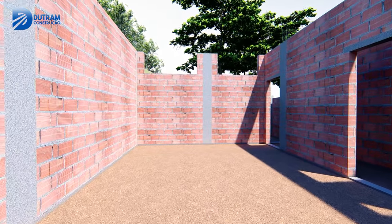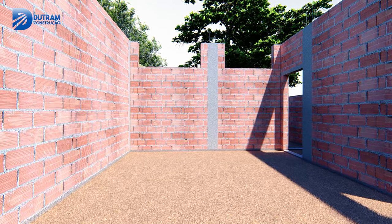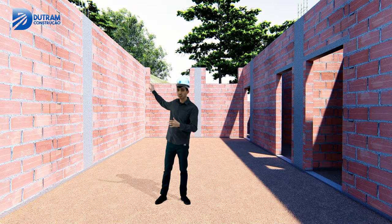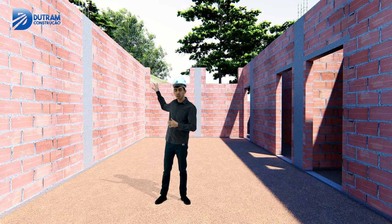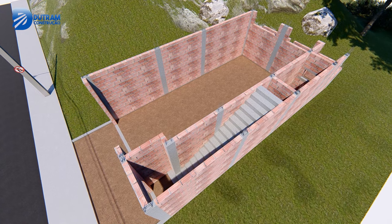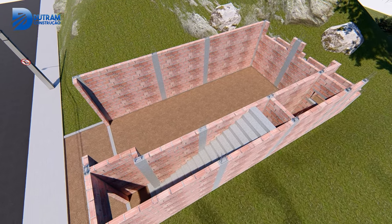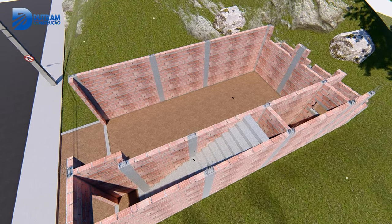Aqui a gente já tem a parte inferior totalmente concluída, já com todas as aberturas. A gente vai ter essas duas aberturas na parte dos fundos para a área comercial, além das portas de acesso à parte dos fundos também. Aqui vocês podem ver como ficou o acesso ao depósito e ao banheiro. Agora vamos passar para a cobertura dessa área e logo para a parte superior.